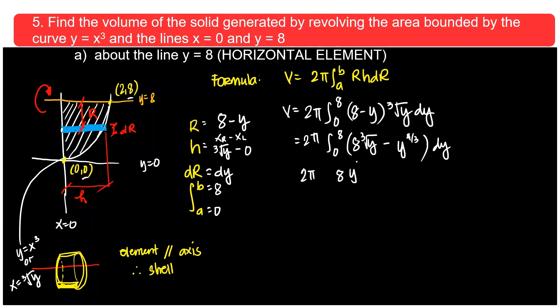So when you solve this, 2π times 8, 1 third plus 1, that's 4 thirds over 4 thirds minus y, 4 thirds plus 1 is 7 thirds over 7 thirds from 0 to 8. So there's 2π, 8 divided by 4 is 2 times 3 is 6 times 8 cube root is 2 to the 4 is 16 minus 3 over 7. Cube root, what's 2 to the 7? 8 to the 7, right? So this one minus 0 minus 0.